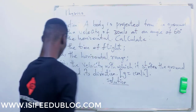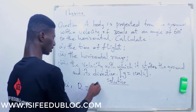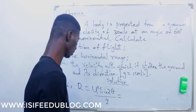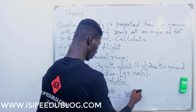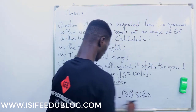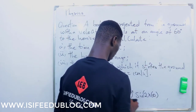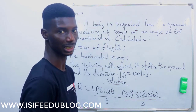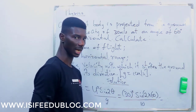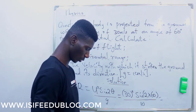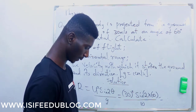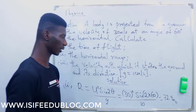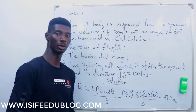For question (II), the range: R = u² sin 2theta / g = 30² × sin(2 × 60°) / 10 = 900 × sin 120° / 10. Computing this gives R = 77.9 meters. So the horizontal range in this question is 77.9 meters.